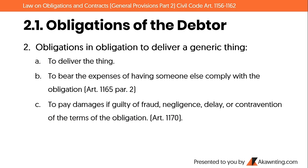For obligation to give a generic thing, the obligations are fewer. There is no obligation to take care of the thing or to deliver its fruits and accessories, because if the generic thing is lost or damaged, you can simply deliver another one. For example, if the agreed cellphone is lost, you can just buy another cellphone to deliver.